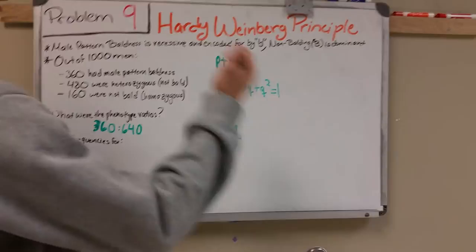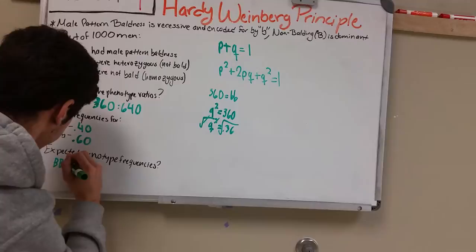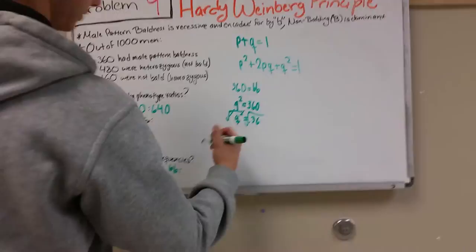Now we're looking for the genotype frequencies, so we'll be looking for homozygous dominant, we already have homozygous recessive, and the heterozygous. For homozygous dominant we need BB, for the heterozygous we need big B little b, and for the recessive we need little b little b. We already had that so we'll have 0.36 there.